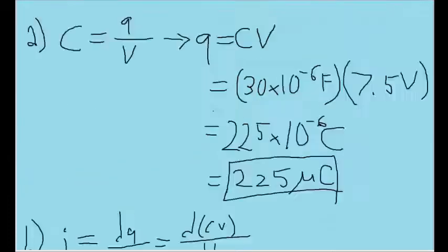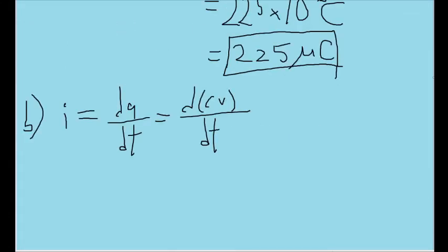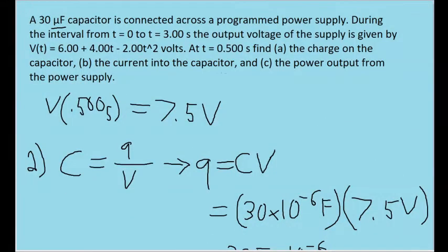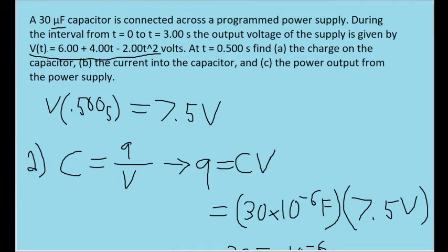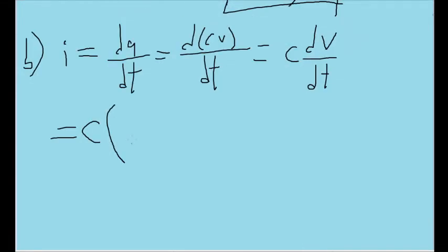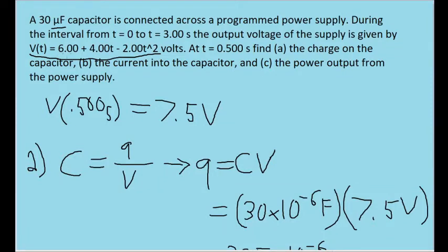And once again, the capacitance is constant as given to us by the problem. So we can pull this C out. And it becomes the capacitance times the derivative of the voltage with respect to time. And we have the capacitance and we are given the function for the voltage, meaning we just need to take the derivative of this voltage function that we have up here. So this is going to be equal to C times, and now I'm going to take the derivative of the voltage function with respect to time. Now, you'll need to know calculus to solve this, but basically this is just a simple derivative here. So I'm going to take the derivative of each individual term of this voltage function.